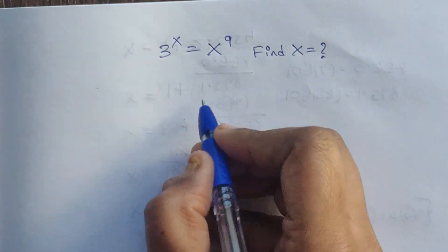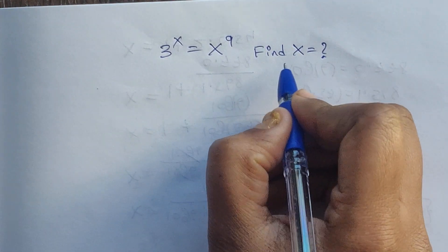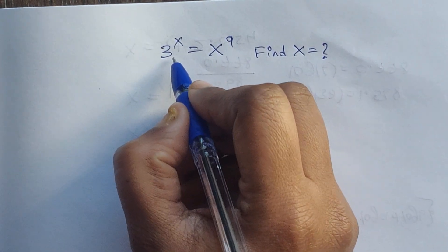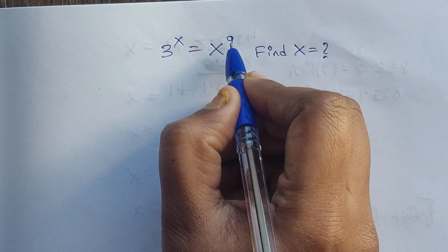Hello everyone, welcome back to my channel. Here we have one problem. In this problem we have to find the value of x. The question is: 3 to the power of x equals x to the power of 9.